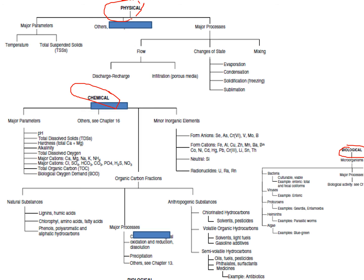Physical analysis is divided into measured parameters — temperature and total suspended solids — and measured processes including flow (discharge, recharge, infiltration for porous media), changes of state such as evaporation, condensation, solidification or freezing, and sublimation.